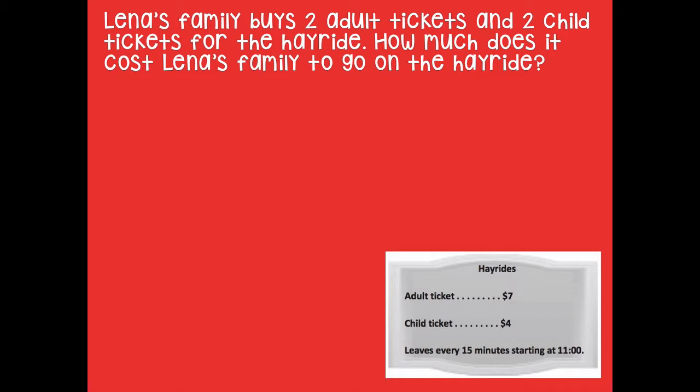Pause the video and do that, then click play when you're ready to go over it together. Okay friends, here's what I came up with. I'm going to represent it first with a number bond. Here, C is my unknown, representing the cost of the tickets. I picked C because C relates to cost — you can choose a different letter, that's fine. I try to relate the letter back to what the problem is asking you to figure out.